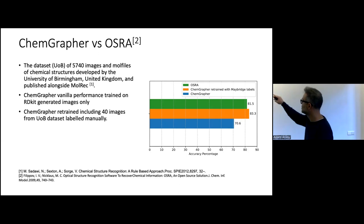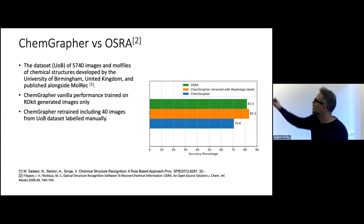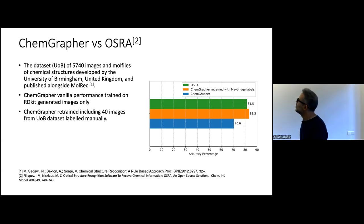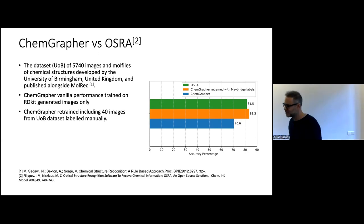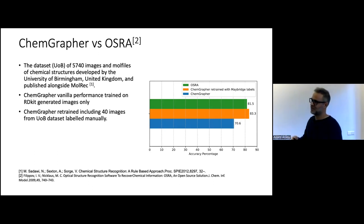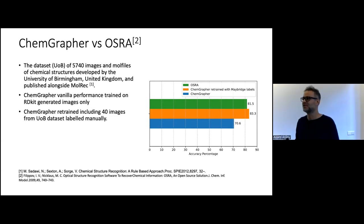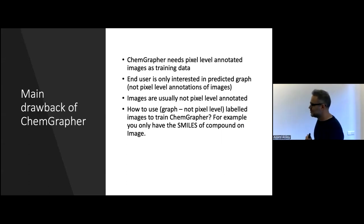We benchmarked against OSRA, an open-source rule-based tool. Using only the vanilla generated RDKit images — which come with a specific RDKit style — gives a fairly good performance (the blue bar), but OSRA is still better on the scanned image dataset. However, if you manually label just 40 images from that dataset, it boosts performance already to 83%, which is better than OSRA. This shows the difficulty of obtaining such labels, but once you have them they can really boost performance on your target domain.